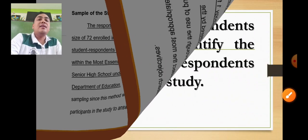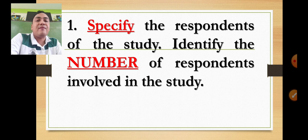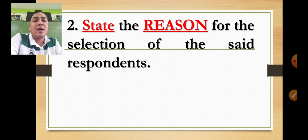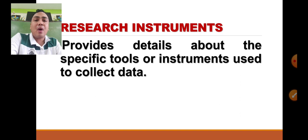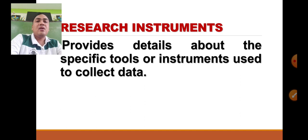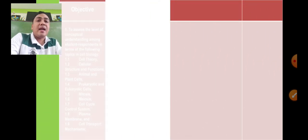Purposive sampling was used because general biology one is exclusive for grade 11 students as prescribed by the Department of Education — they are the most appropriate participants to answer the research questions. Specify the respondents, the number of respondents, the reason for their selection, and the sampling technique. After analyzing the samples, the next part is research instruments. Instrumentation plays a crucial role in generating data — without research instruments, data collection is impossible.